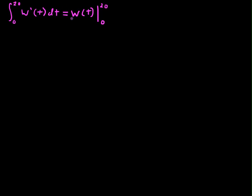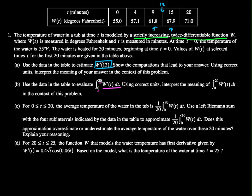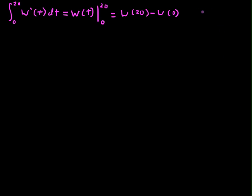Okay, so I just need to evaluate w of t from 0 to 20, or w of 20 minus w of 0. Okay, and looking back at our problem, we can see that w of 20 is 71.0 degrees Fahrenheit. W of 0 is 55.0 degrees Fahrenheit. So let's go back.